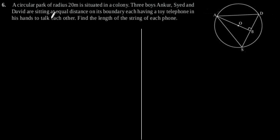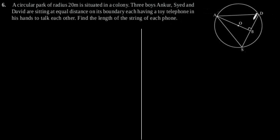Exercise 10.4, Question number 6. A circular park of radius 20 meters is situated in a colony. Three boys, Ankur, Syed and David, are sitting at equal distance on its boundary, each having a toy telephone in his hand to talk to each other. Find the length of the string of each phone.